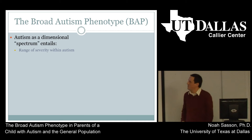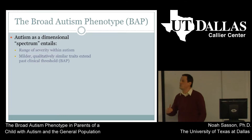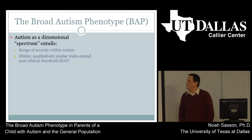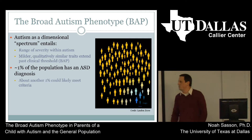This brings us to the conceptualization of the broad autism phenotype. Autism is conceptualized as a spectrum, which entails a range of severity within individuals who have a diagnosis, but it also suggests that spectrum might extend beyond the threshold for clinical diagnosis — individuals can have milder, qualitatively similar traits consistent with autism that don't meet the amount or severity to warrant the diagnosis. These characteristics might just be normally distributed within the population. About 1% of the population has an ASD diagnosis, and about another 1% likely could meet criteria, but a diagnosis is only warranted when somebody's presenting with social dysfunction.